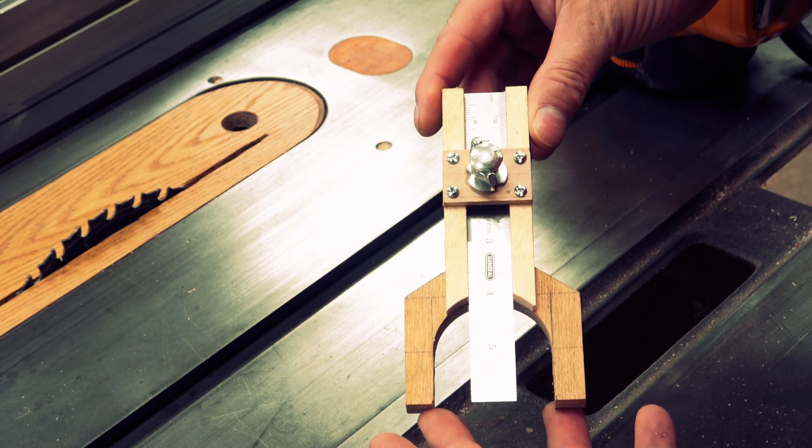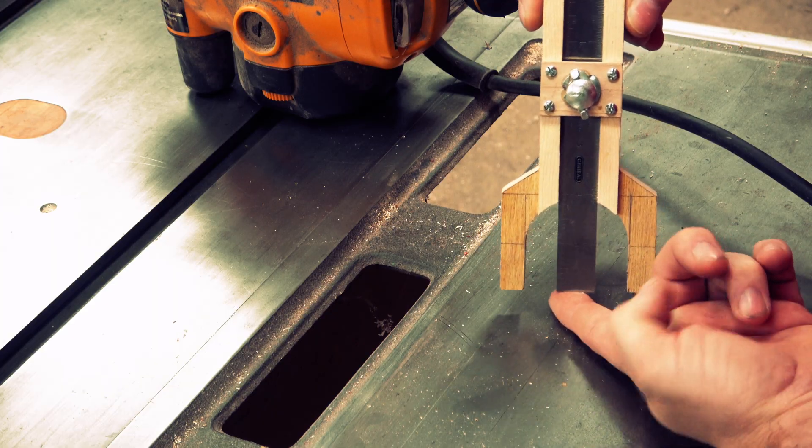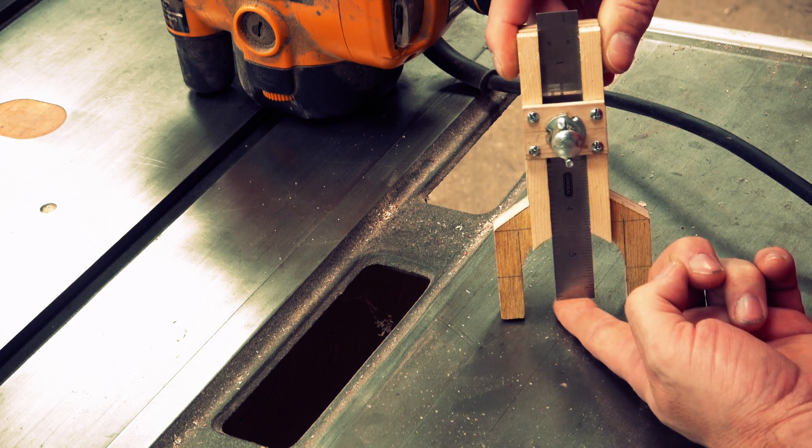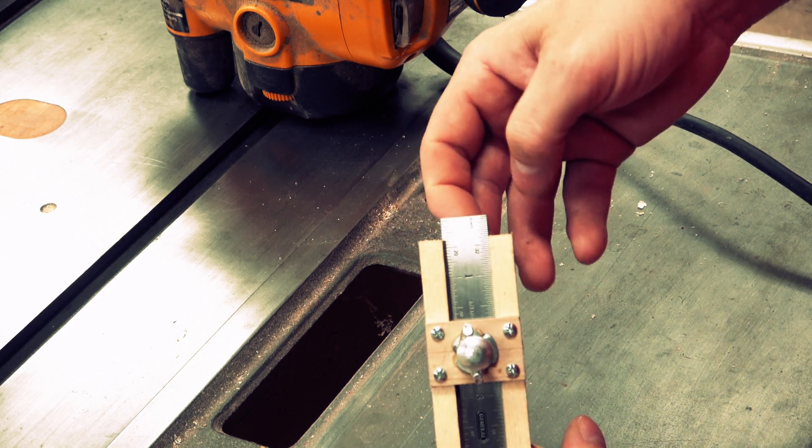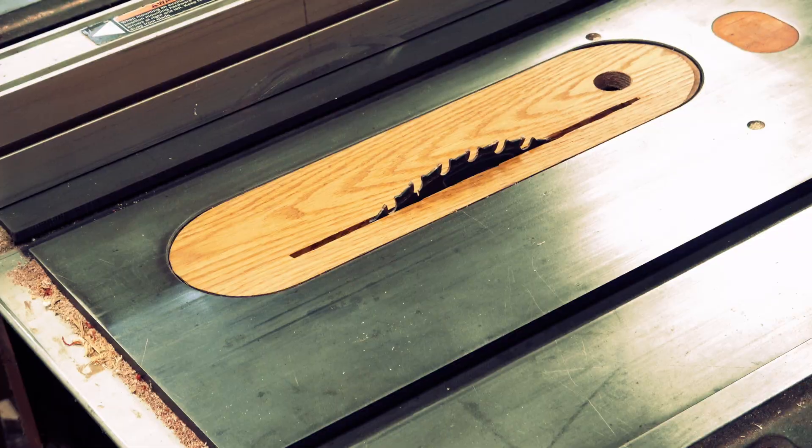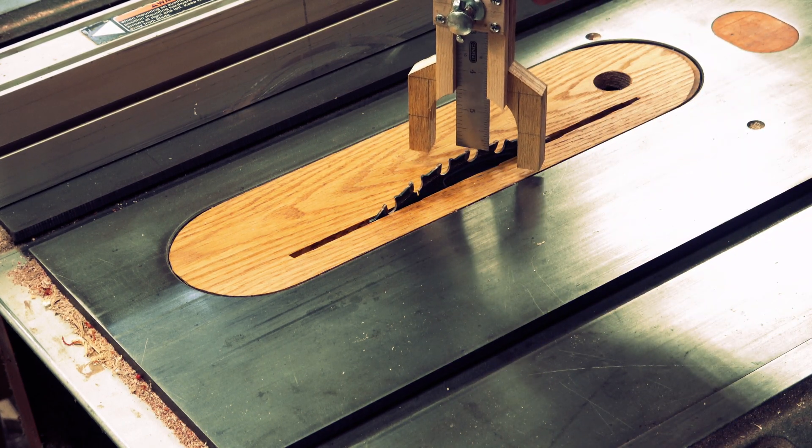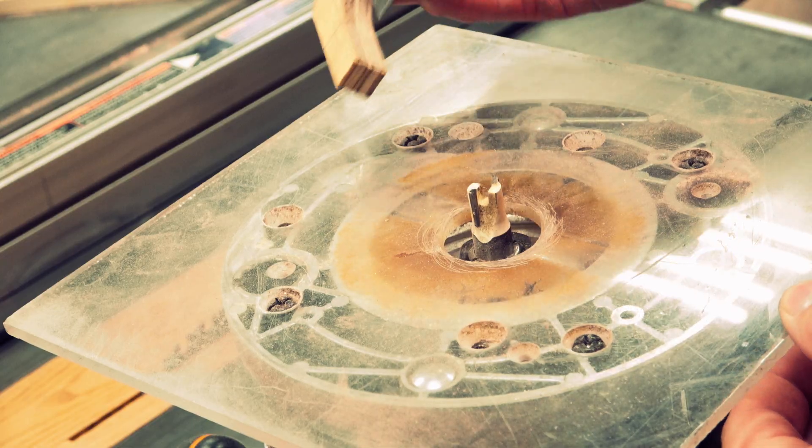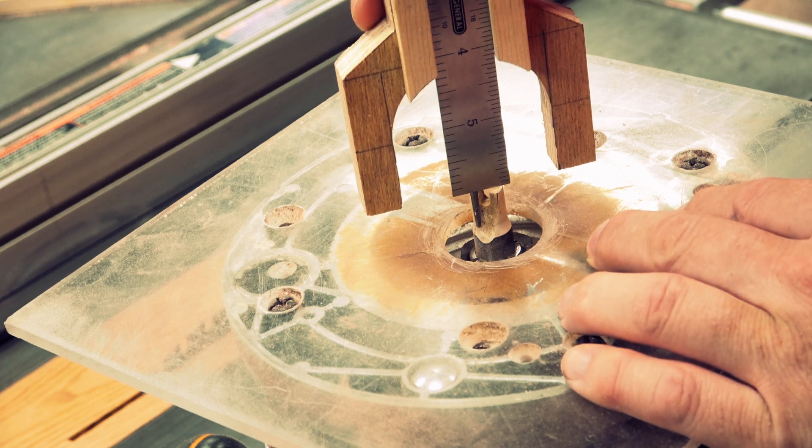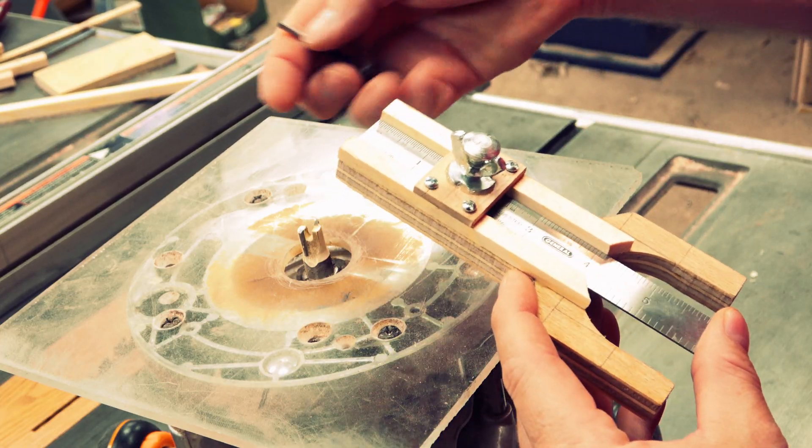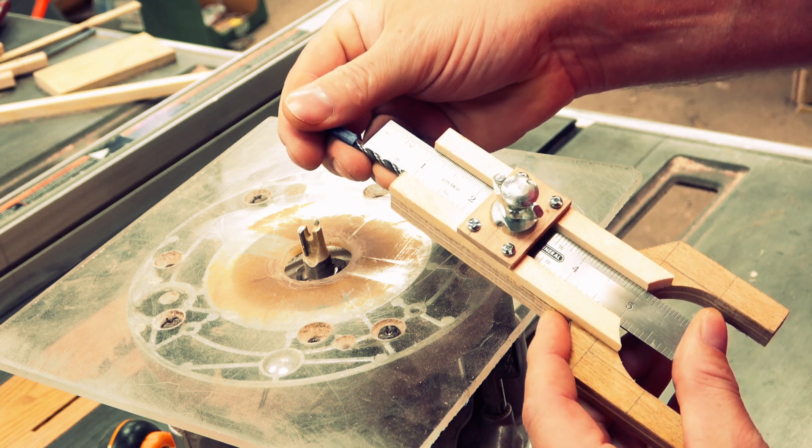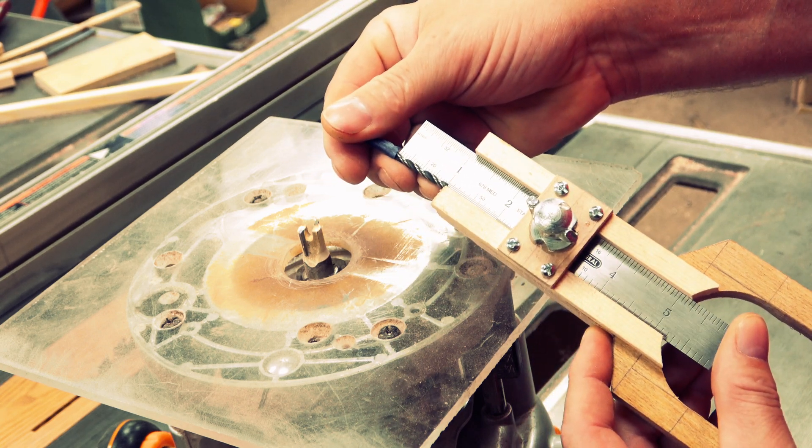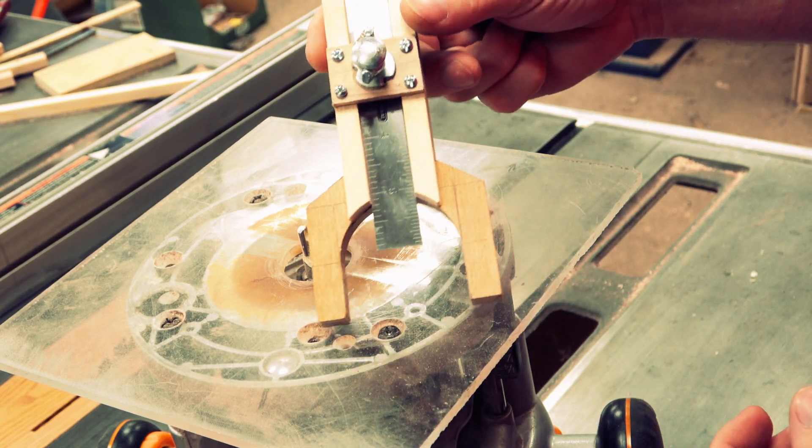Today I'm going to show you how to make this depth gauge. The way it works is we place an object below the ruler and as we push down on the top, it'll give us the depth. This is really good because we can use it to find the height of our table saw blade as well as setting the height of our router bits. I also like it because I can set my drill bits for certain depths by adding a piece of tape on the top. So let me show you how to make this.